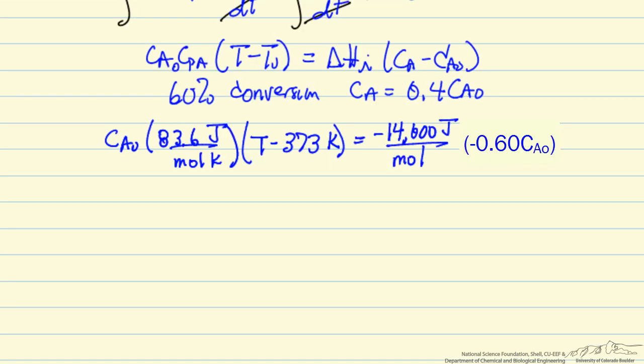So I've made the substitution, I've kept CA0 in here because you can see this also cancels, and I can solve for the temperature at 60% conversion. This temperature is 478 Kelvin, or the temperature is 205 degrees C.